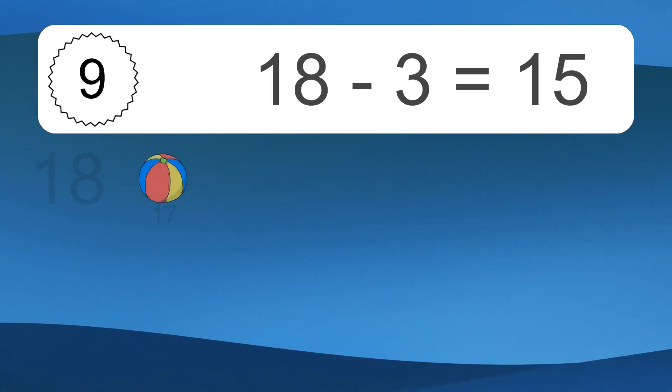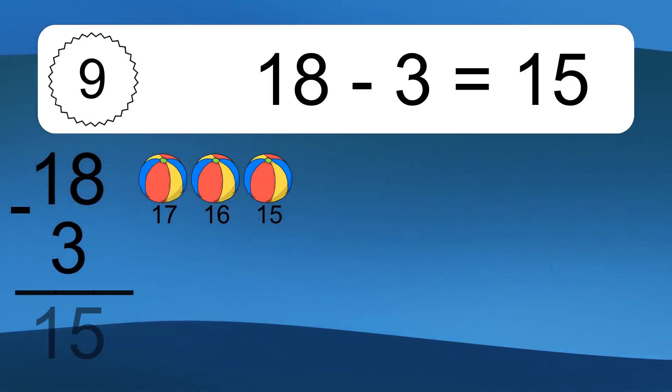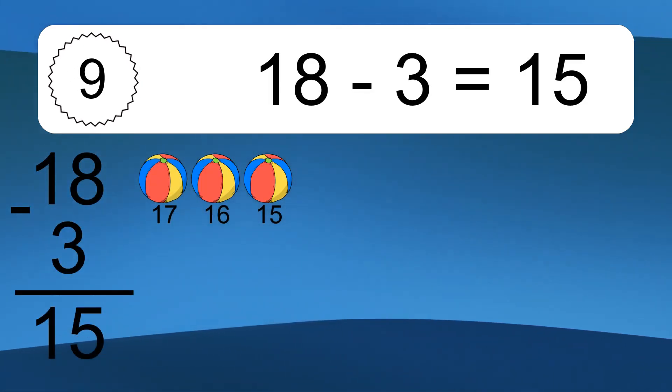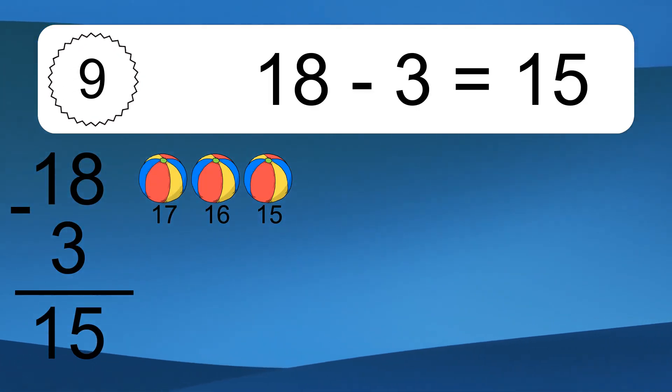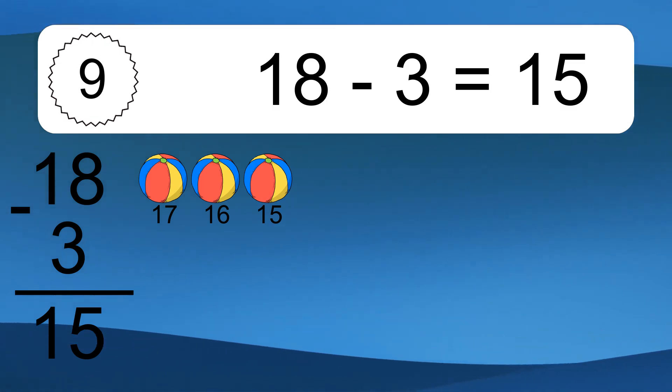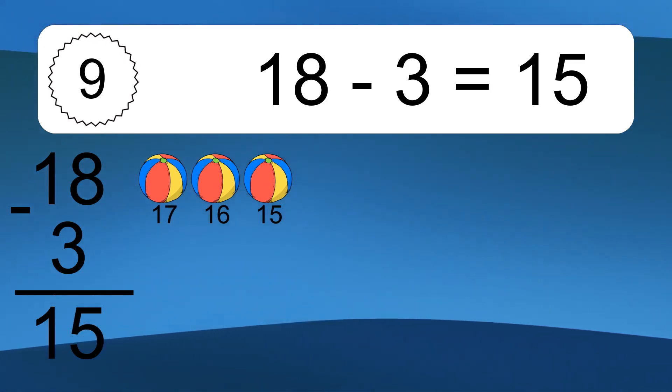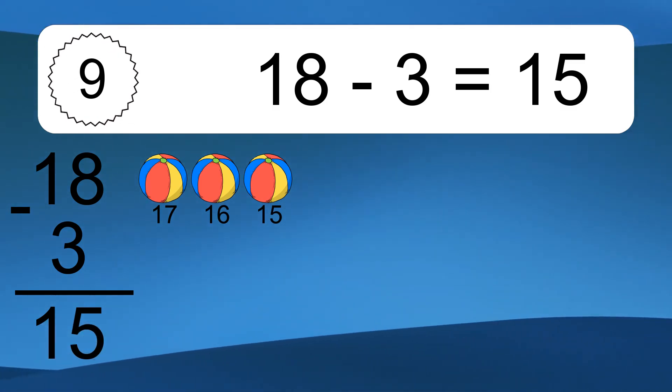18 minus 3 equals what? 18 minus 3 equals 15. Let's count it. 17, 16, 15.